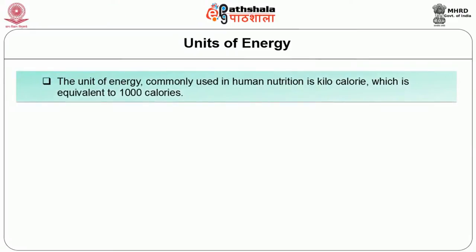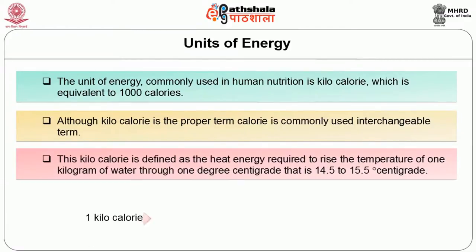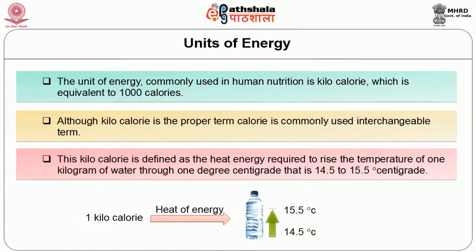The unit of energy commonly used in human nutrition is kilocalorie, which is equivalent to 1000 calories. Although kilocalorie is a proper term, calorie is commonly used as an interchangeable term. The kilocalorie is defined as the heat energy required to raise the temperature of 1 kilogram of water through 1 degree centigrade, that is from 14.5 to 15.5 degrees centigrade.